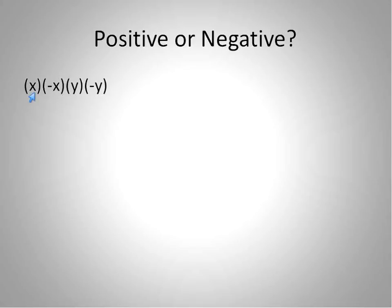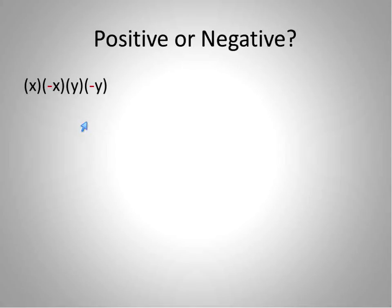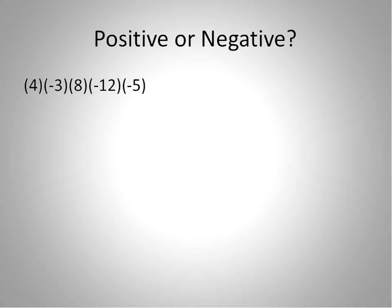I first want to do this with variables, because the biggest mistake people make is worrying about the actual numbers. You don't have to worry about the numbers — all you're looking at is the number of negative signs. In this case there are two negative signs. Two is even, therefore your answer will be positive — even though we don't know what the numbers are.